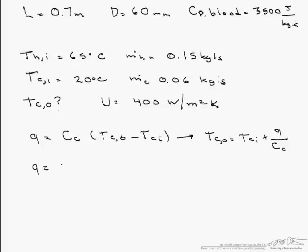Q equals the effectiveness times the minimum heat capacity rate times T_H,i minus T_C,i. This effectiveness is actually a ratio of Q over Q_max, where Q_max is C_min times T_H,i minus T_C,i.